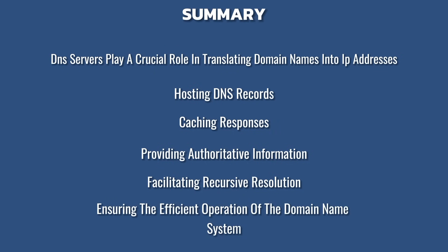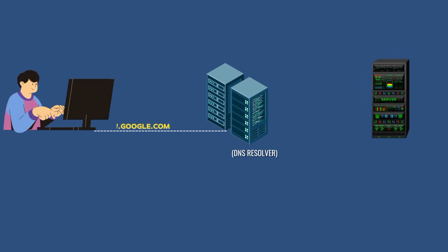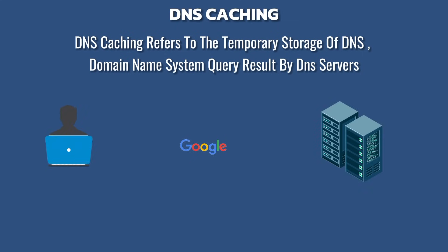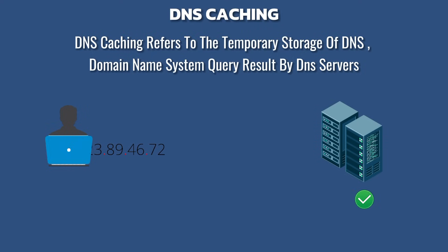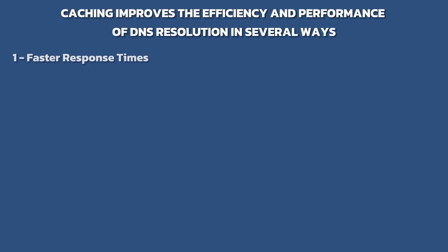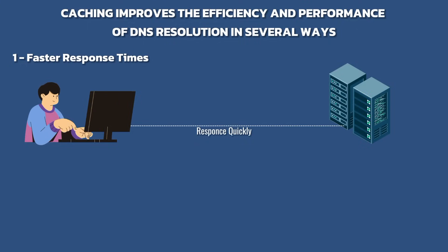DNS operates through a distributed network of servers worldwide. When you type in a domain name, your device sends a query to a DNS resolver, which then communicates with authoritative DNS servers to find the correct IP address. DNS caching refers to the temporary storage of DNS query results by DNS servers. When a DNS resolver receives a query, it searches its cache; if it finds a matching entry, it can provide the IP address directly from cache without querying authoritative DNS servers. Caching improves efficiency — by storing previously resolved DNS records locally, resolvers can respond to subsequent queries for the same domain name more quickly.